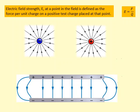Electric field strength is defined as the force per unit charge on a test positive charge placed in the field. You have to pretend to be a positive charge to figure out what direction the electric field is pointing. For example,